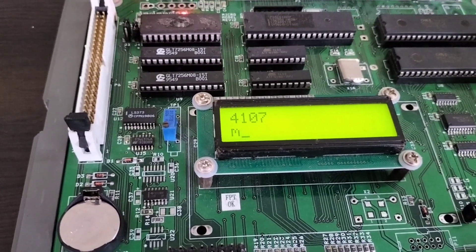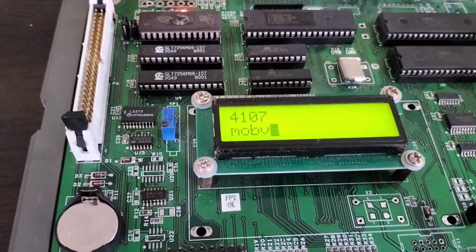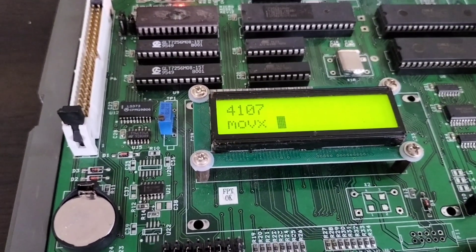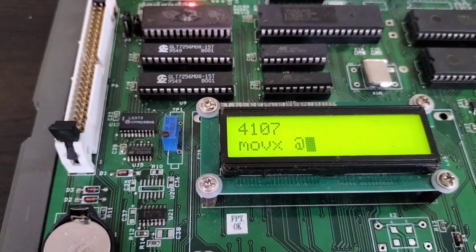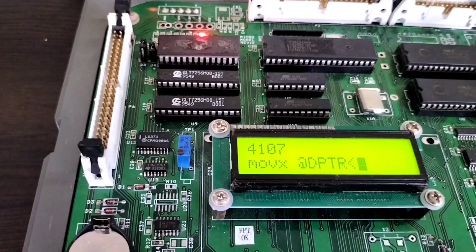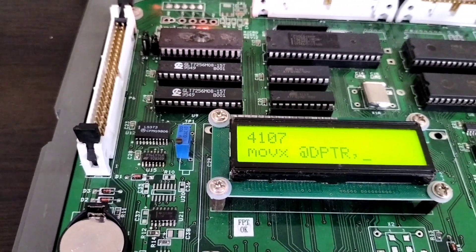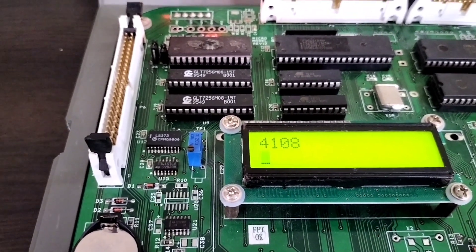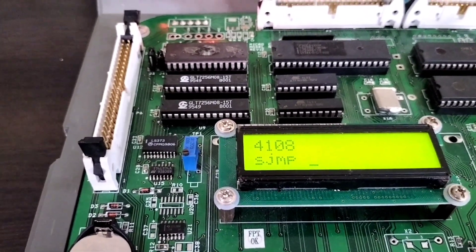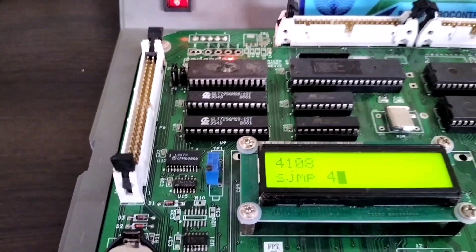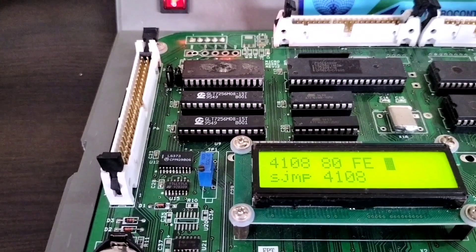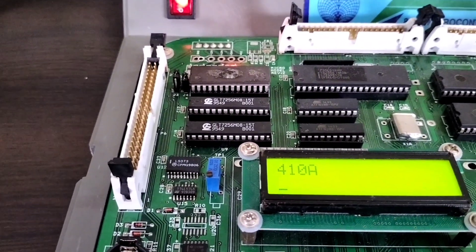So next MOVX @ DPTR, A. Then finally, SJMP. So SJMP, we have to give the same location address. So 410H. So with this your program is over.